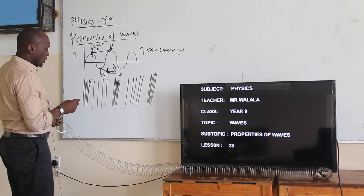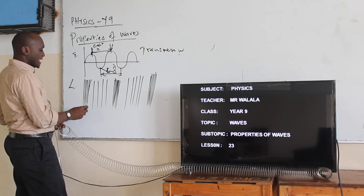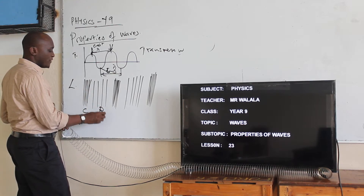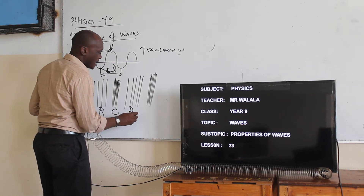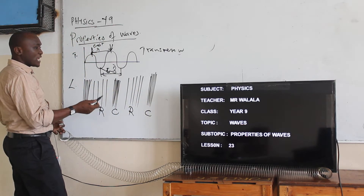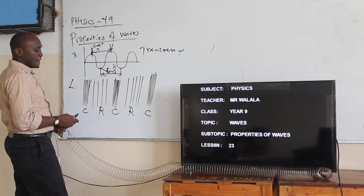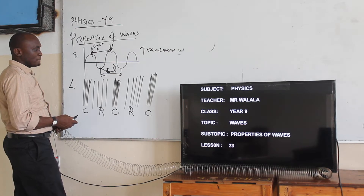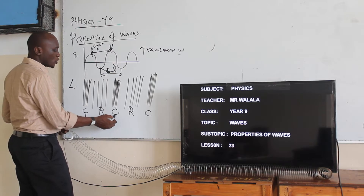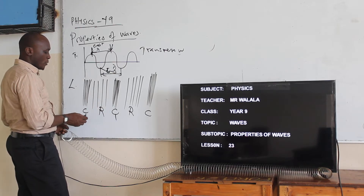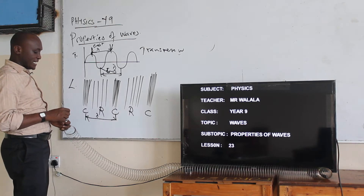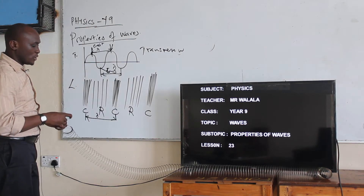When we talk about the longitudinal wave, we are going to refer to compression and rarefaction. To find the wavelength, we go to the center of one compression and to the center of another compression — that distance is what we call the wavelength.